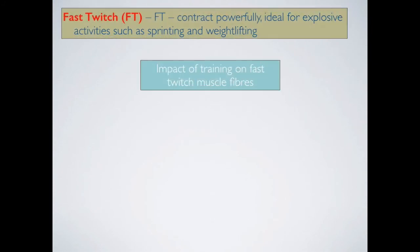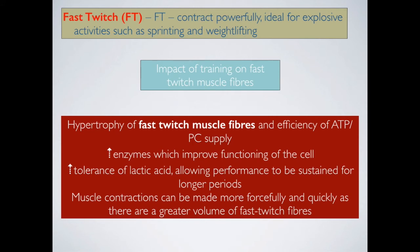In terms of training, hypertrophy of fast-twitch fibres will occur if we train the correct energy system. If we do anaerobic interval training and train the ATP-PC system, we will be training the fast-twitch muscle fibres — the specificity principle applies here. Within these muscle fibres, hypertrophy occurs and they grow larger, able to contract more quickly. There is an increased amount of enzymes which improve cellular functioning, acting as catalysts for chemical reactions such as ATP production via the ATP-PC system. Fast-twitch fibres also increase in their tolerance of lactic acid, allowing performance to be sustained for longer periods of time.